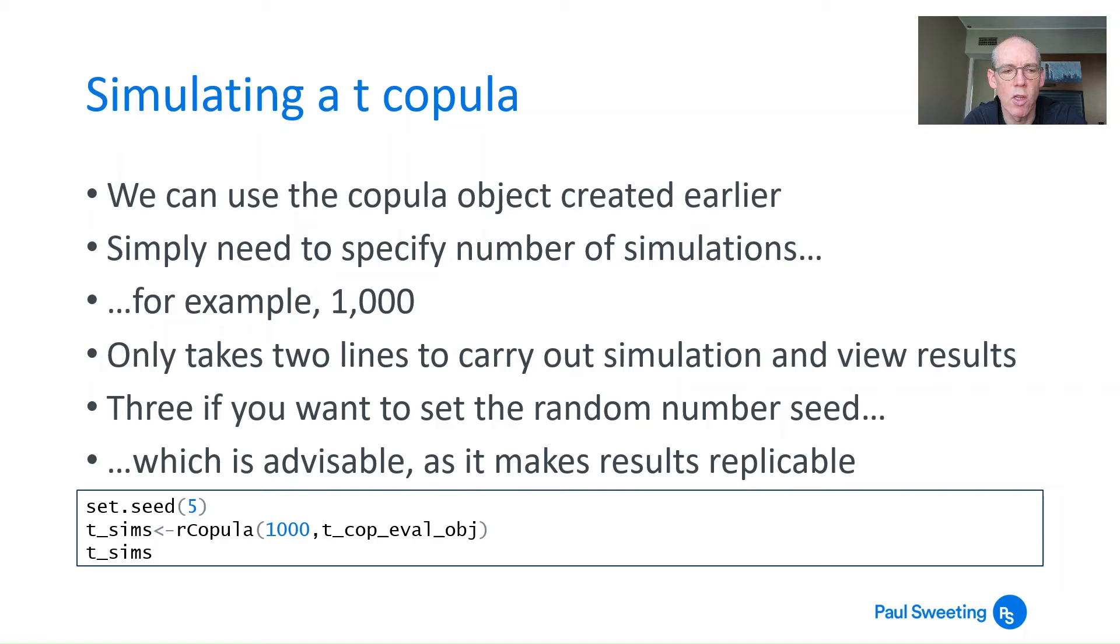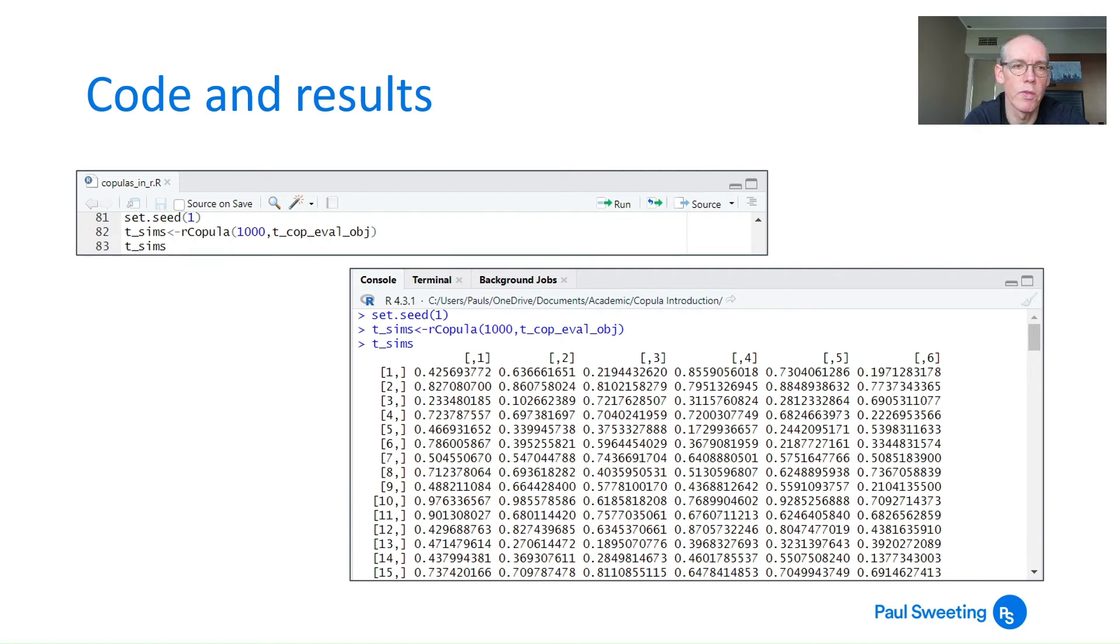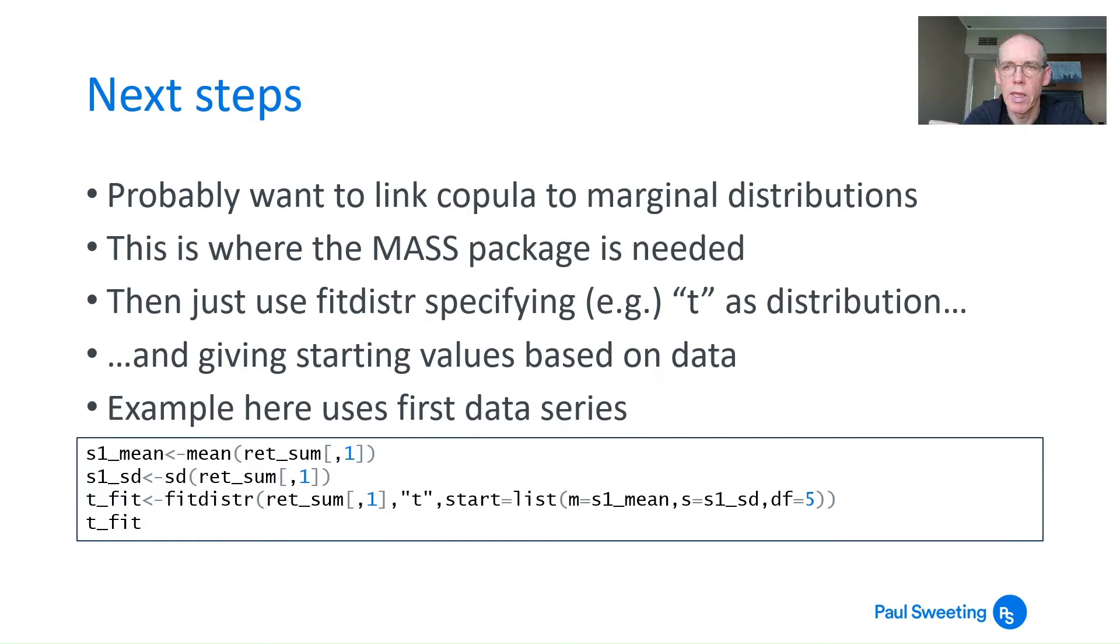We use set.seed(5), setting our seed number to five. Then create the object t_sims using rCopula to give a thousand simulations based on our t copula evaluation object with those correlations and six degrees of freedom. Then t_sims gives you the results. That's what the three lines of code look like, and the bottom right shows the first 15 lines of our thousand simulations. It's so straightforward.